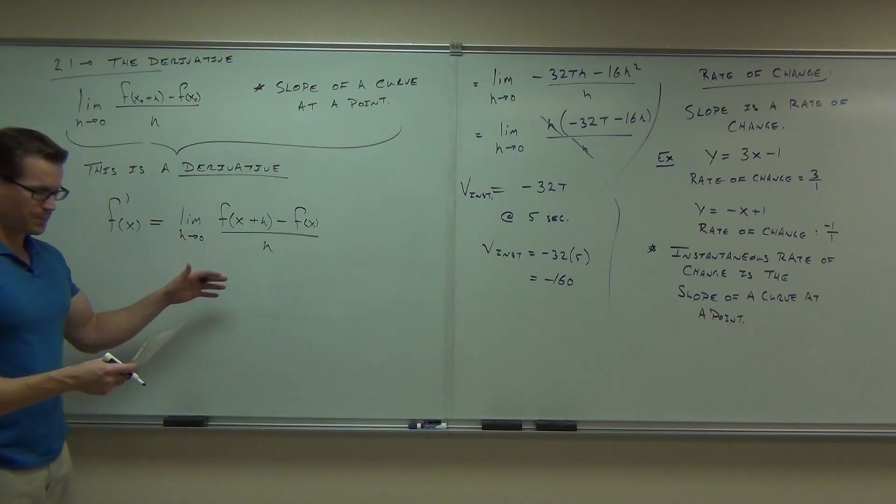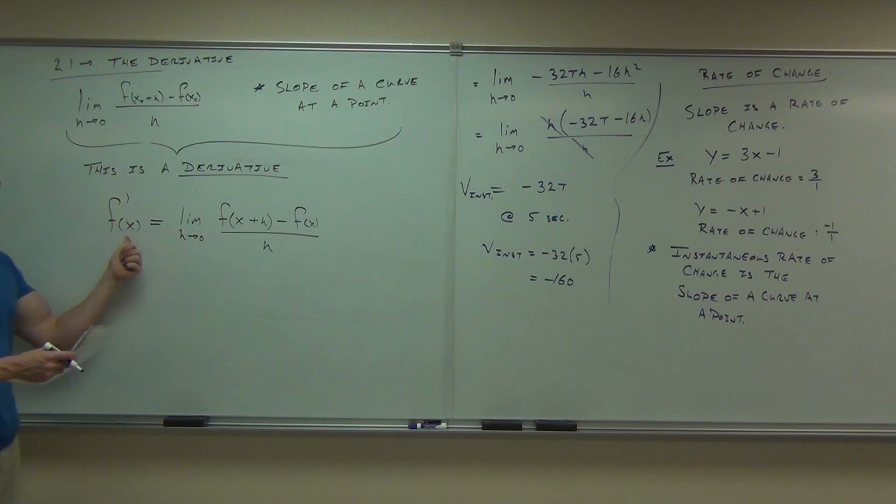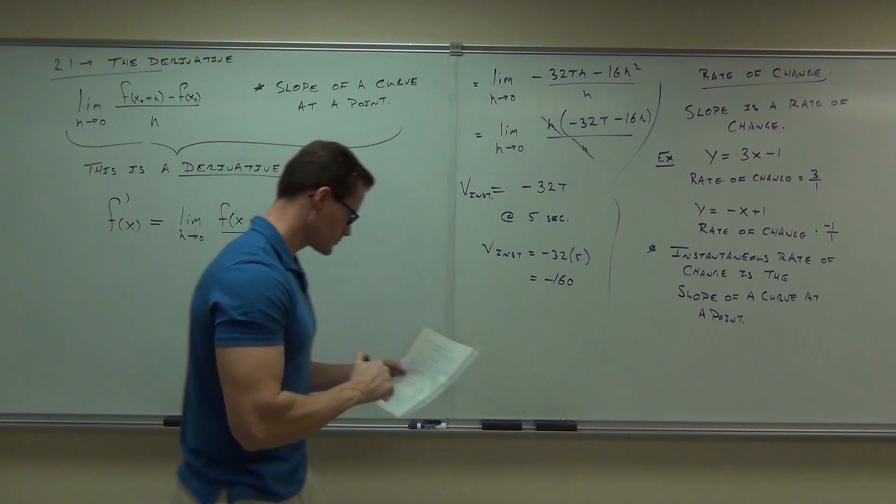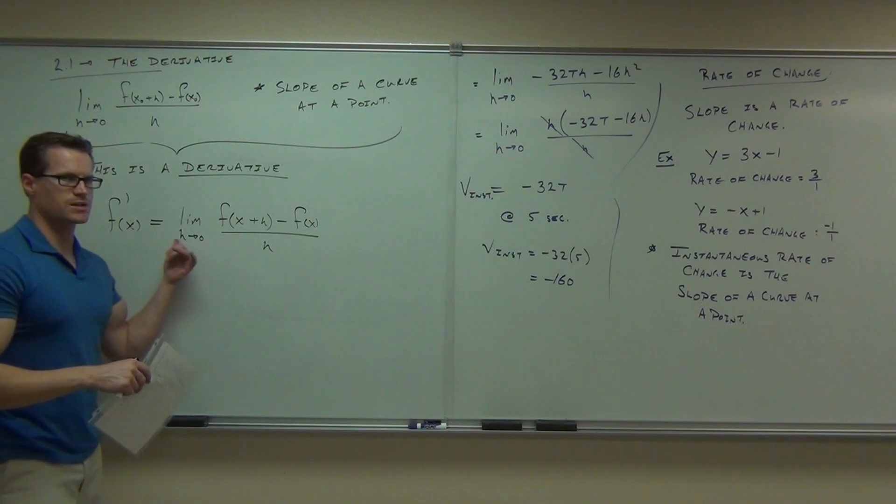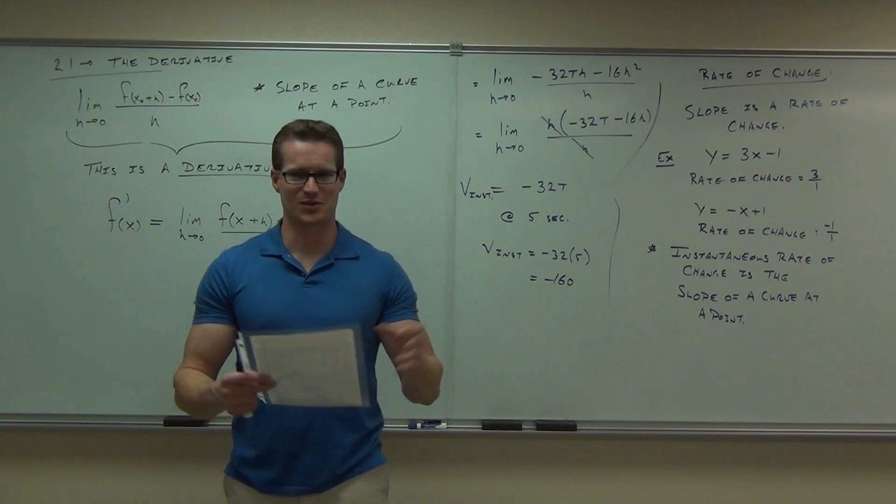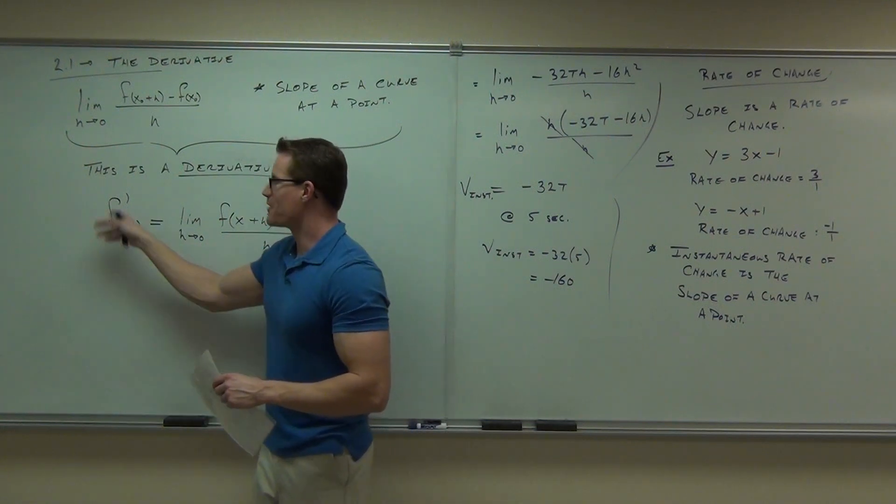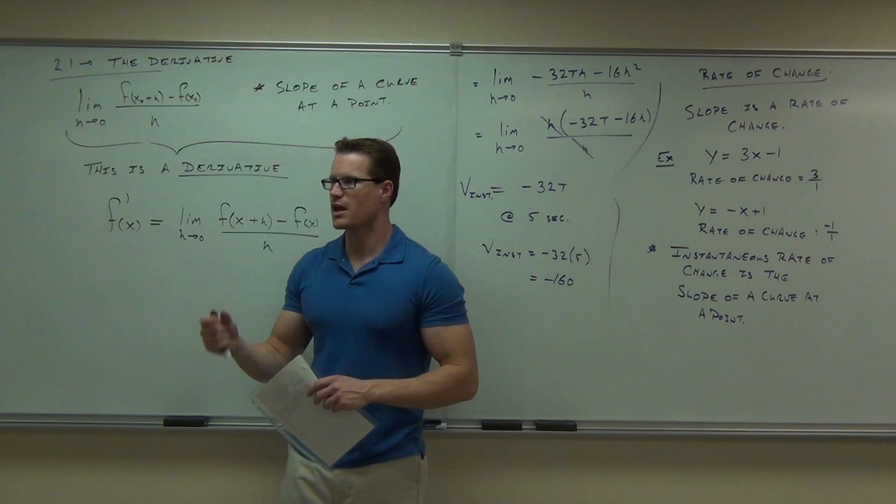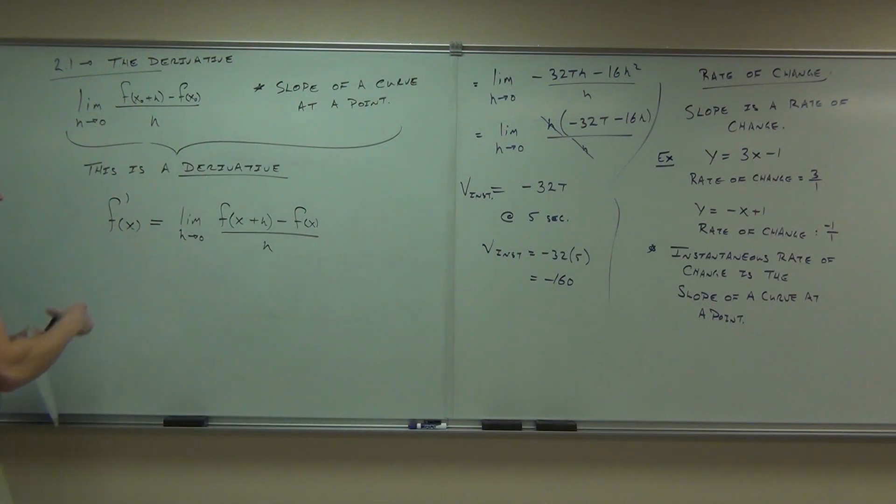This is the derivative of f with respect to x. The derivative of f with respect to x. It says the derivative of that function named f, taking x as our variable. Also, you can say this as prime, like Optimus Prime. Very cool. But f prime. F prime of x. Say that with me. F prime of x. Yeah, f prime of x. That means the derivative of f with respect to x.